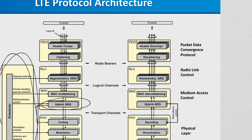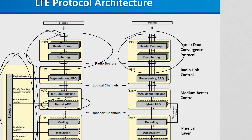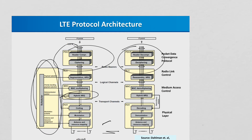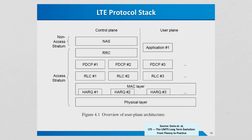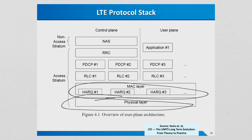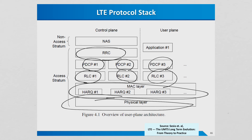Above the RLC layer, you have the PDCP, or packet data convergence protocol, which deals with ciphering and header compression. To summarize the radio protocol view: at the lowest layer is the physical layer, then the MAC layer which handles one or more hybrid ARQ sessions, then RLC sessions, PDCP sessions, one RRC session, and finally the user applications.